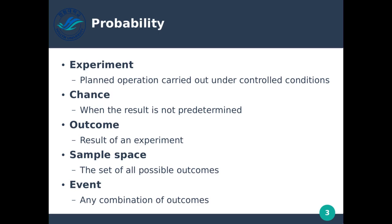Before we get into probability, let's give some definitions. Whenever we are measuring probability, we're using it to measure the outcomes of experiments. An experiment is a planned operation carried out under controlled conditions. We know essentially what we want to test, we know all the variables, and we control all of the variables surrounding our experiment. If we're trying to estimate the probability of some event occurring, we have to be able to control the conditions to make sure we are actually testing the variables we're interested in.